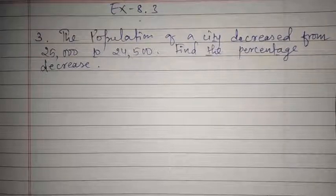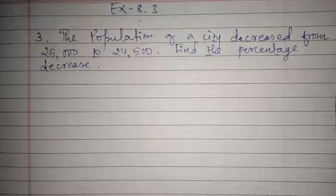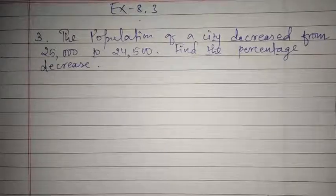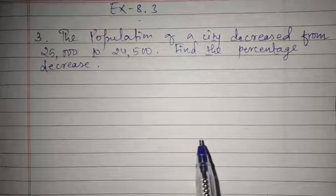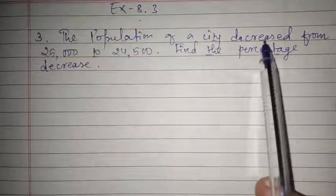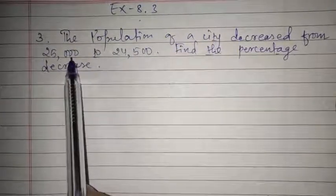Hello my dear students, welcome to the maths class. In the previous class we completed up to question number two of exercise 8.3. In today's session we will start from question number three, which states: the population of a city decreased from 25,000 to 24,500.